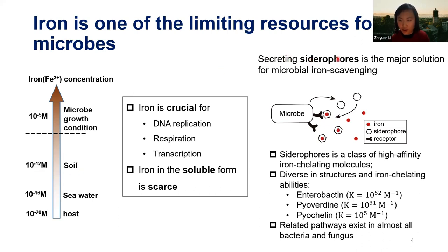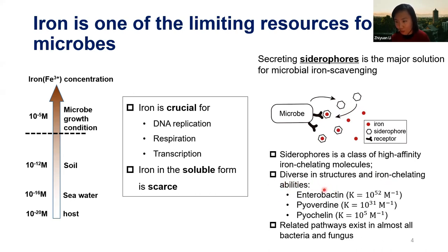Secreting siderophores is a major solution for almost all microbes to scavenge iron. Siderophores are a class of diverse small molecules that have high binding affinity with iron. They have diverse structures and ability to bind iron. For example, one of the most remarkable has the highest known binding affinity with iron and is capable of extracting iron even from aerosols. Almost every microbe has at least one siderophore-producing or -receiving pathway.